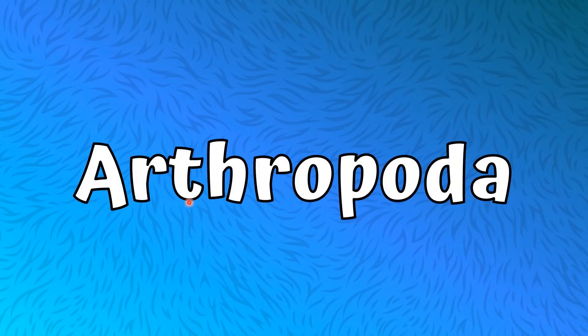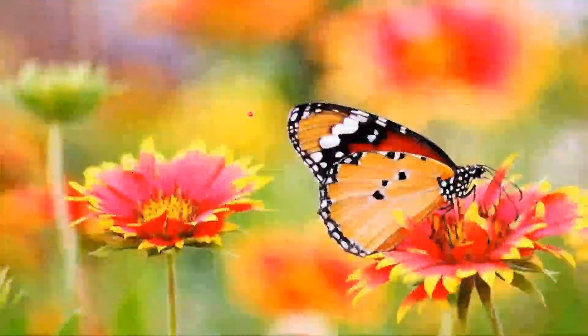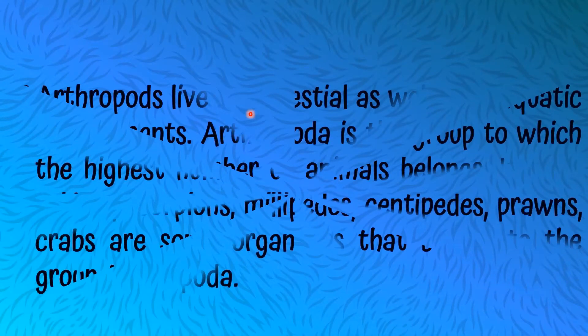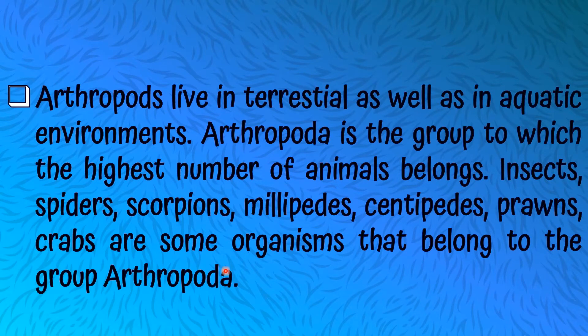Let's talk about our fourth Invertebrate: Arthropoda. Arthropods live in terrestrial as well as in aquatic environments. Arthropoda is the group to which the highest number of animals belong. Insects, spiders, scorpions, millipedes, centipedes, prawns, and crabs are some organisms that belong to the group Arthropoda.